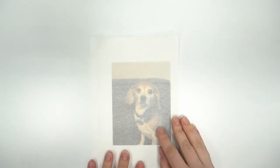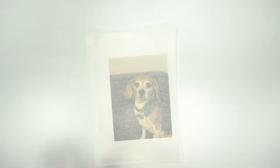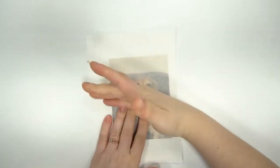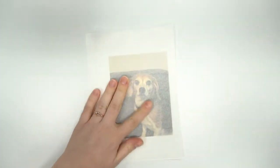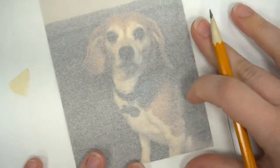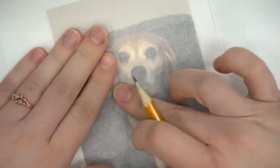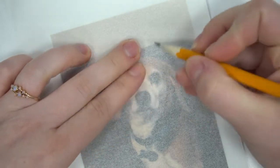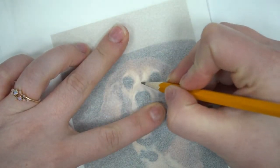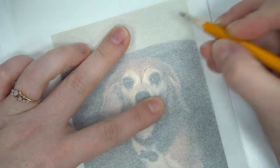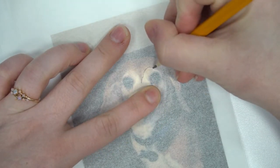So we're going to start by taking our tracing paper and laying it over our photo. I am going to secure it with a little piece of tape. I recommend that if you've never used tracing paper before. It's important we don't shift. And we're just going to look through the tracing paper and with our pencil, trace anywhere that the color has a significant change.